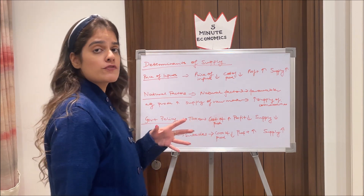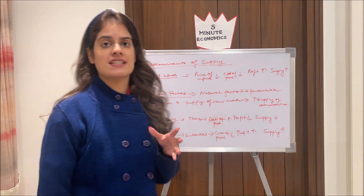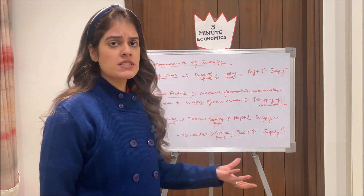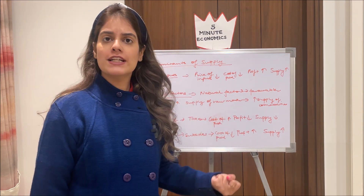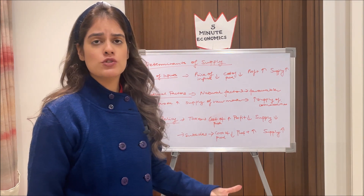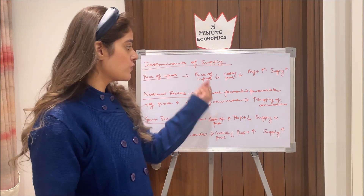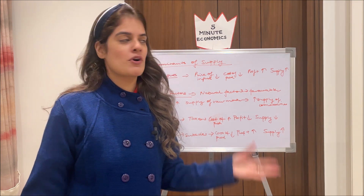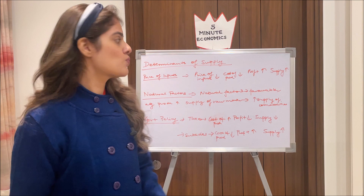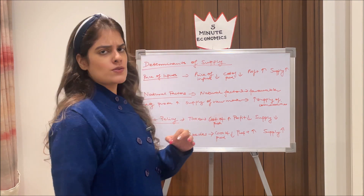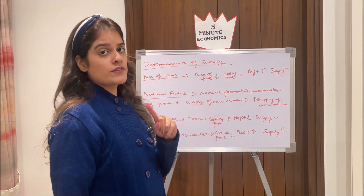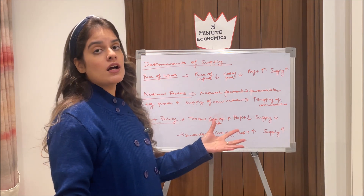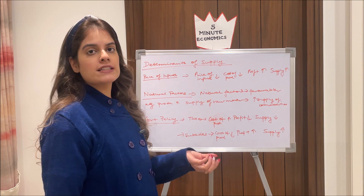Price of inputs also plays an important role in determining supply. If the price of inputs or raw materials falls, it is now cheaper to produce, so the cost of production falls. As a result, profit rises, and when profit rises, producers want to supply more. The vice versa conditions prevail when the price of inputs rises.